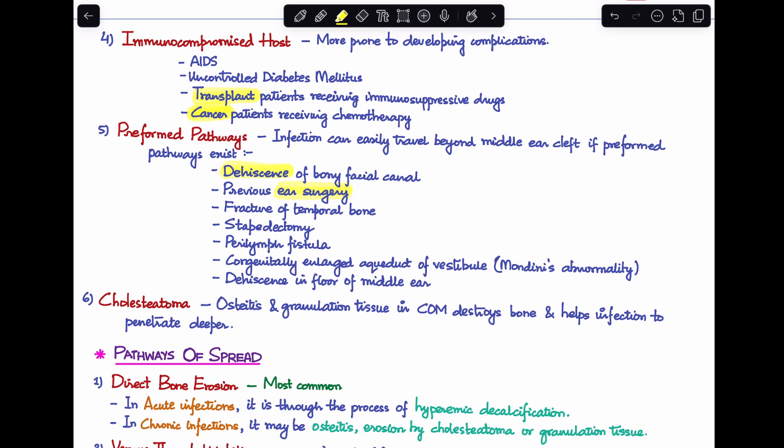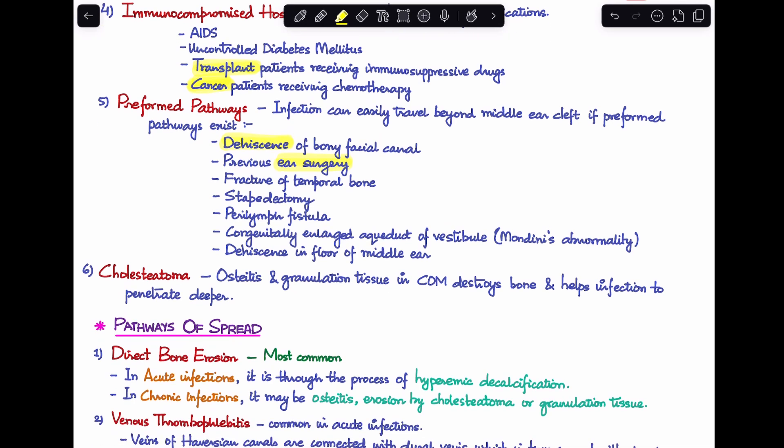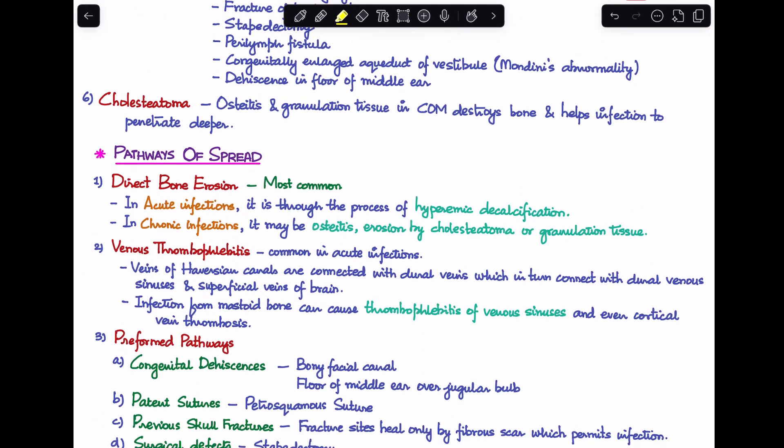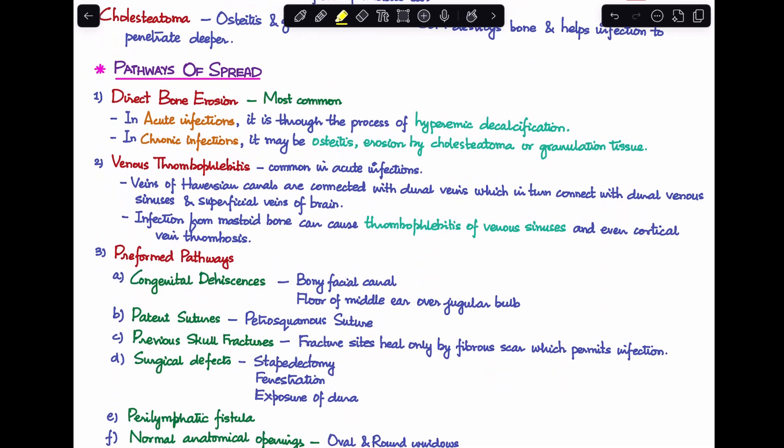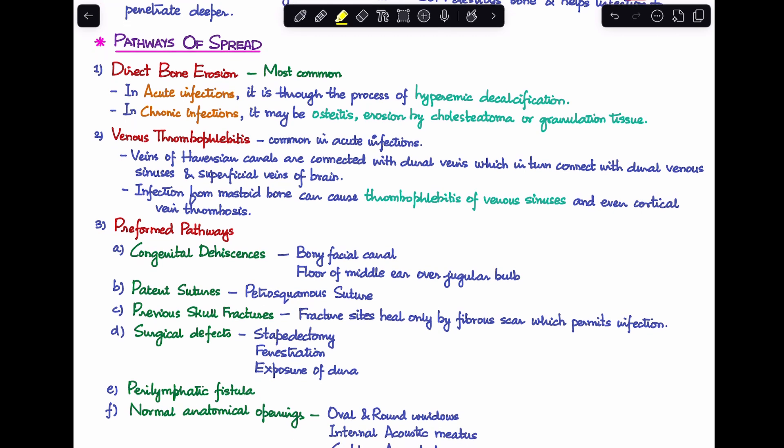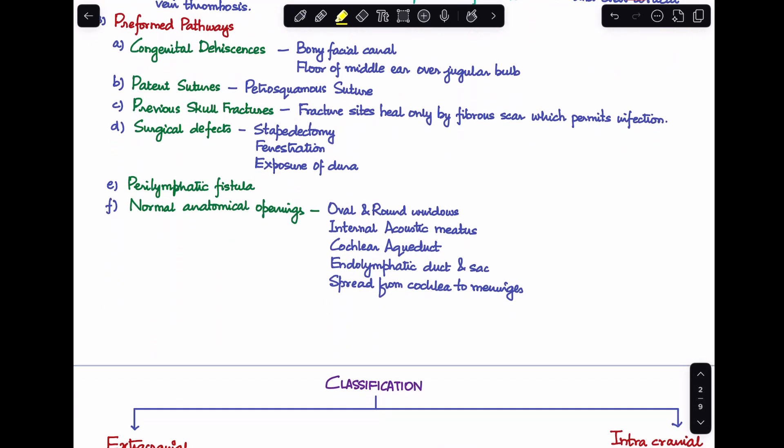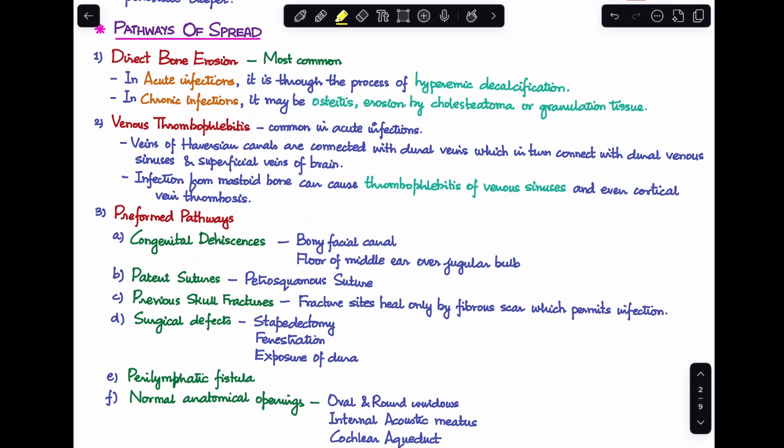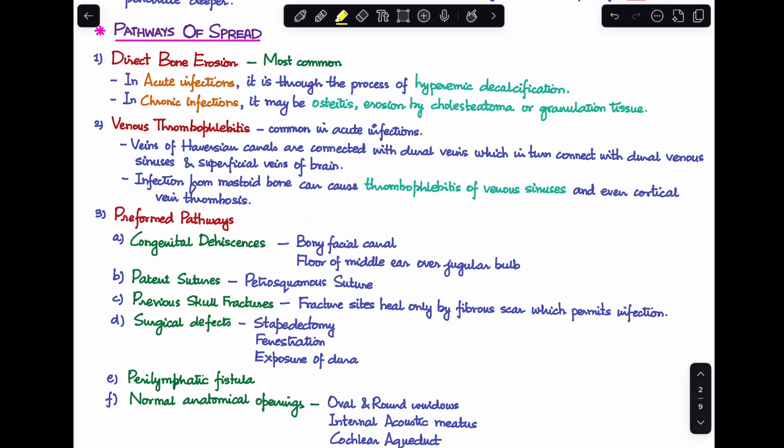So these are the six factors which act as risk factors for the development of complications of CSOM. Next, let's talk about what are the different pathways of spread of these complications. So there are three main pathways over here.